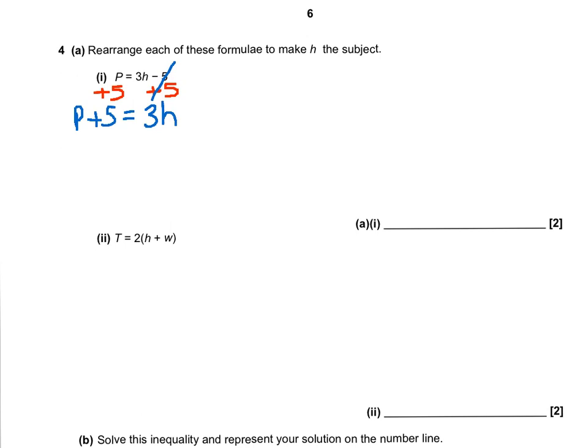So the next thing that's stopping h from being on its own is this 3. And to get rid of that, we're going to divide both sides by 3. On the left-hand side, then, we've got p plus 5, all divided by 3.